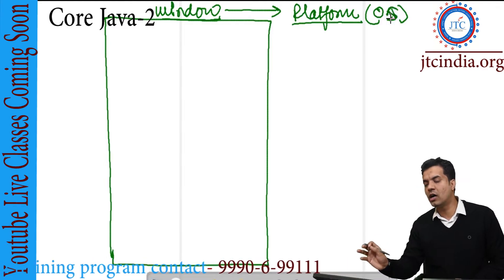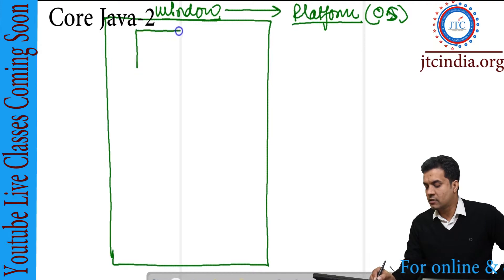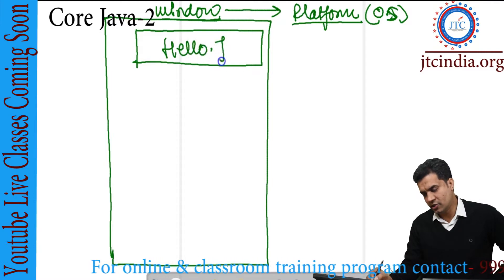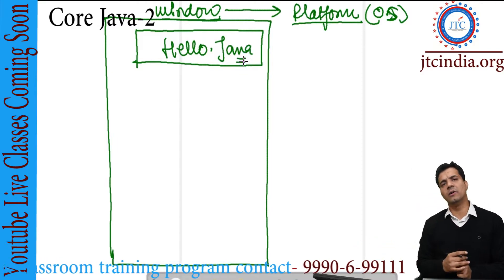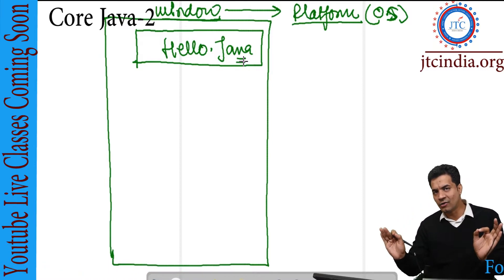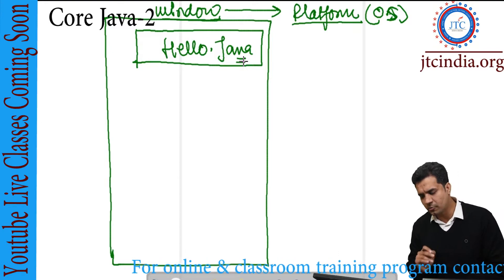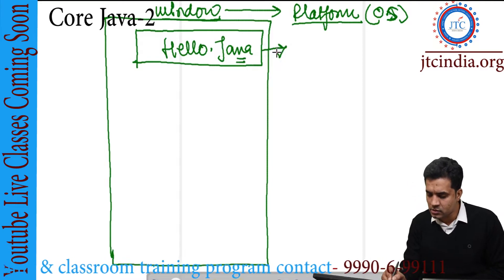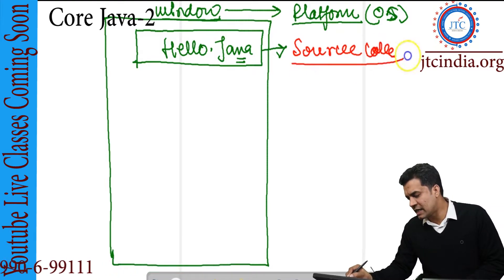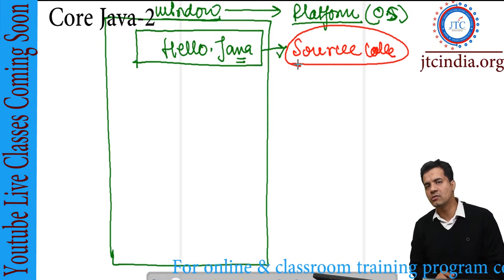In which operating system are you going to write the program? So here, we are writing a hello.java file. I will also be writing programs practically. For now, just remember the few things I am explaining, and if you have any doubts, you can immediately ask your corresponding faculty. This particular file I am calling the source code — the code which you are writing is called source code.